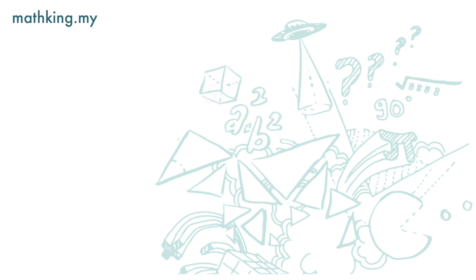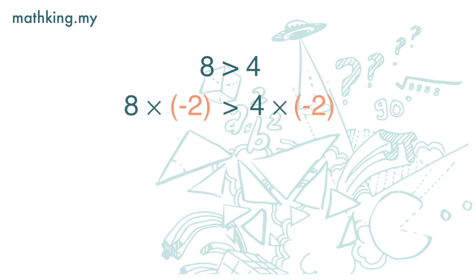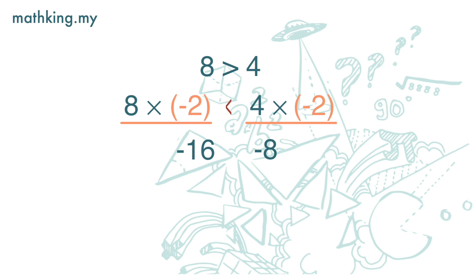But what follows is different. If we multiply both the left-hand side and the right-hand side by negative 2, we have negative 16 on the left-hand side and negative 8 on the right-hand side. Negative 16 is less than negative 8, so 8 times negative 2 is now less than 4 times negative 2. We would have to reverse the symbol to become less than.